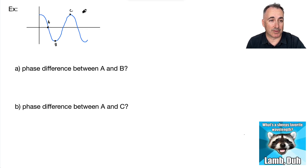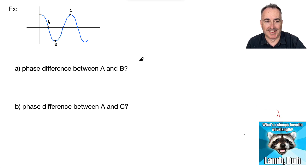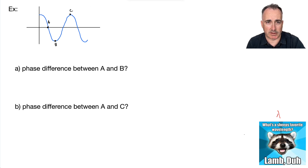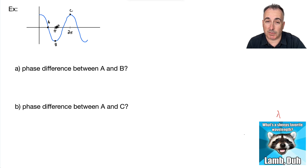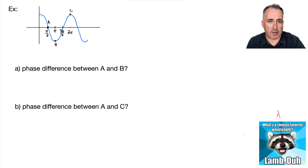Let's do another example. By the way — what's the sheep's favorite wavelength? Lambda! Looking at this graph, one whole cycle runs from here to where it repeats. I'll label that end value as two pi. Half of that is pi, and splitting in half again gives pi over two. Counting up: one pi over two, two pi over two, three pi over two.